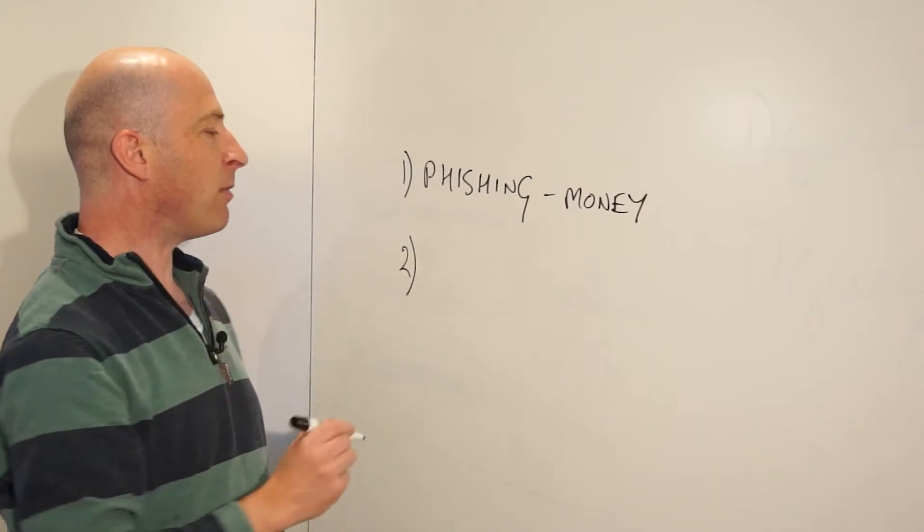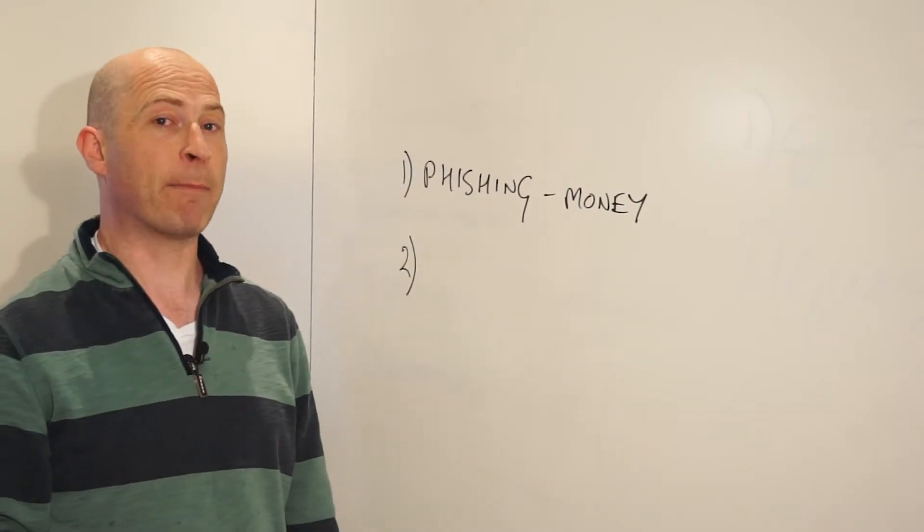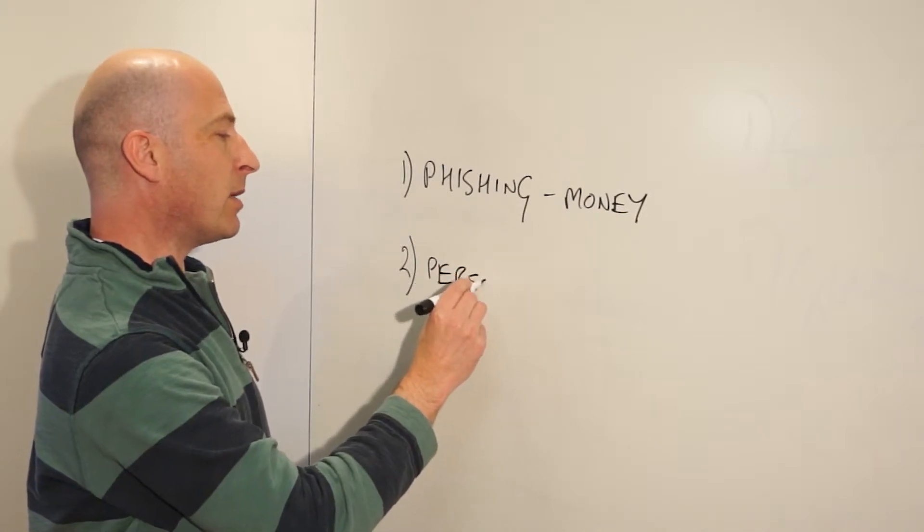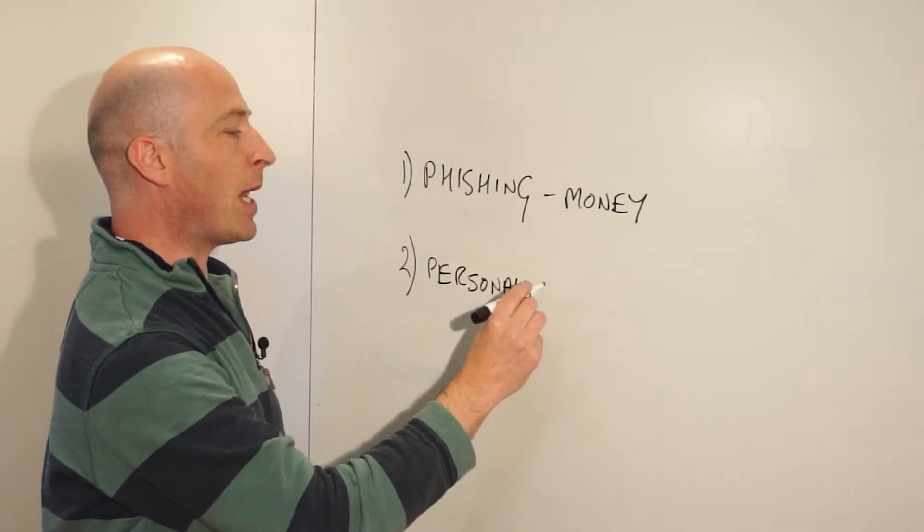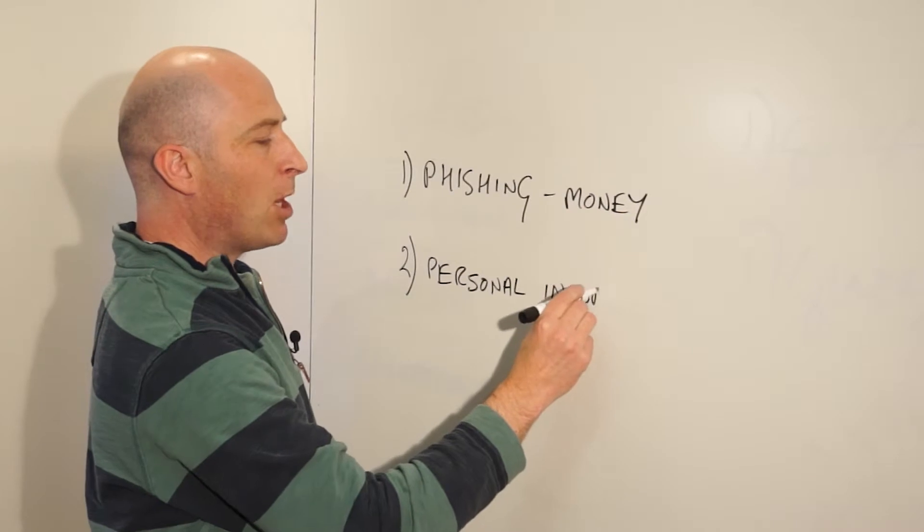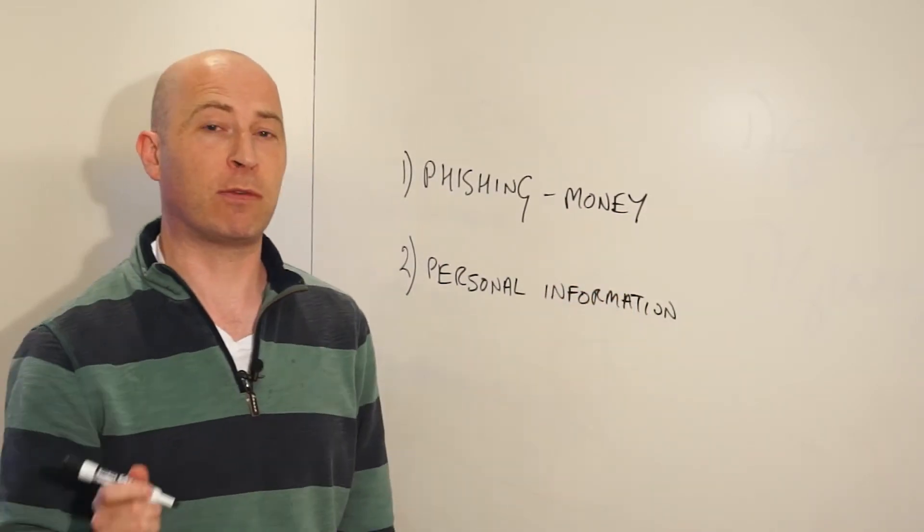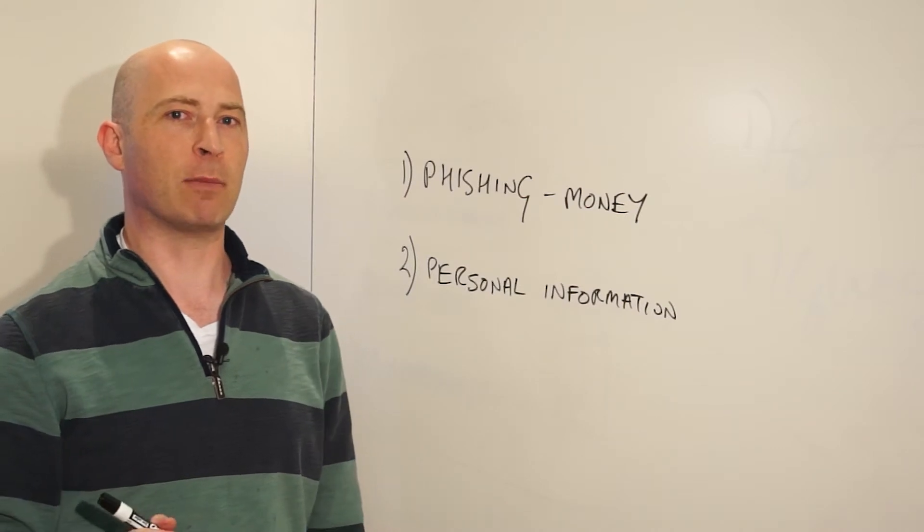But the second thing that is probably even more common in mobile spam is personal information, theft or obtaining that information by deception. Personal information is probably the most valuable commodity in the 21st century that we don't even realize is valuable.